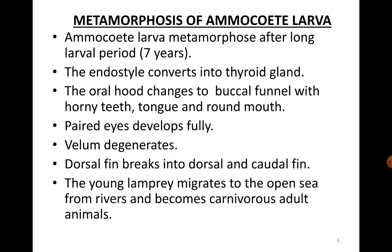Gills develop into gill pouches. The pronephros is replaced by a mesonephros. Paired eyes become uncovered and functional — the adult Petromyzon is not blind, only the larva is. The single median nostril shifts to the top of the head, and the naso-hypophysial sac grows backwards. The nasal sac becomes folded internally. The continuous dorsal fin becomes divided into two. The pericardial cavity becomes completely cut off from the coelom. The spinal cord becomes dorso-ventrally flattened. Skin color changes from yellow-brown to mottled greenish-brown.